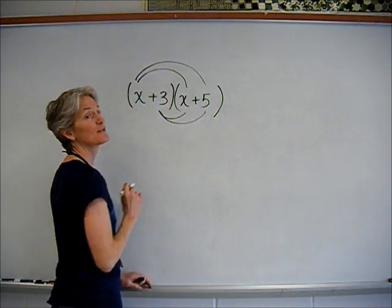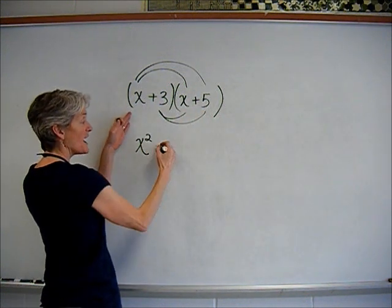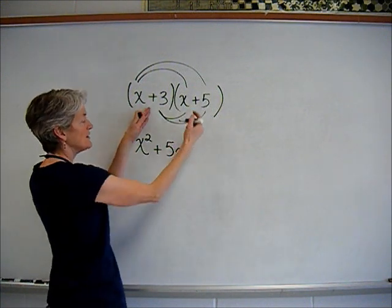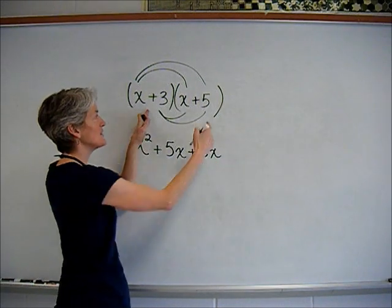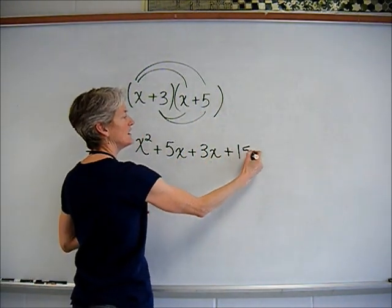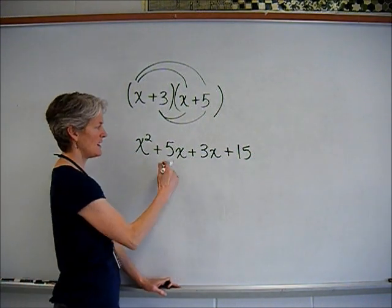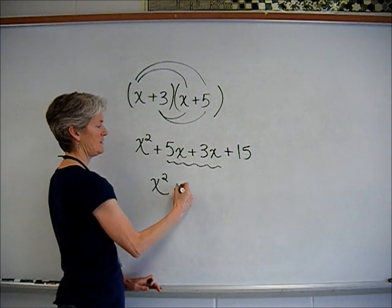Some of you learned that as FOIL. So here we go. x times x is x squared, x times 5 plus 5 times x is 5x, 3 times x is 3x, 3 times 5 is 15. That's great. And I think I can simplify a little further here. I can combine those middle terms. That often is the case.